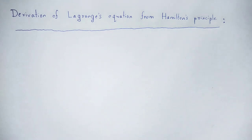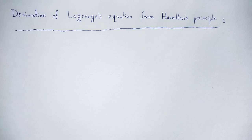We are going to see that the variation of Hamilton's principle is zero. Now, we have to derive Lagrange's equation of motion from Hamilton's principle.